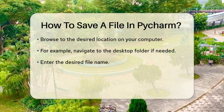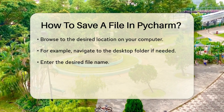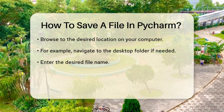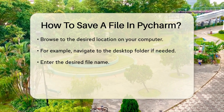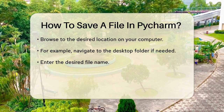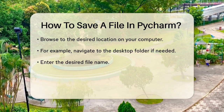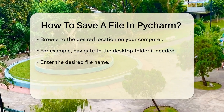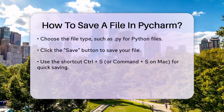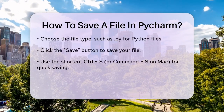Once you're in the File menu, select Save As. This option allows you to choose exactly where you want to save your file. A new window will pop up, giving you the ability to navigate through your computer's folders. In this window, you can browse to the location where you want to save your file. For example, if you want to save it on your desktop, navigate to the Desktop folder. Here, you can enter the name of your file and select the file type, such as .py for a Python file.